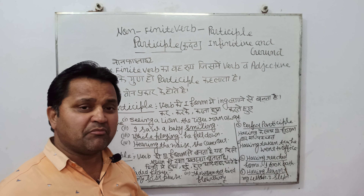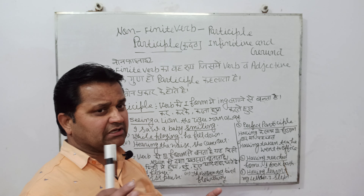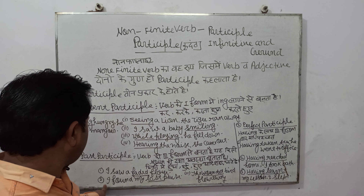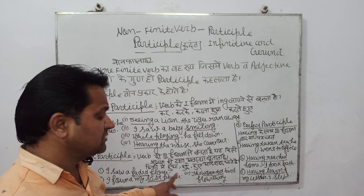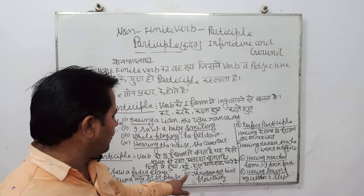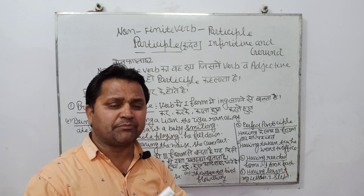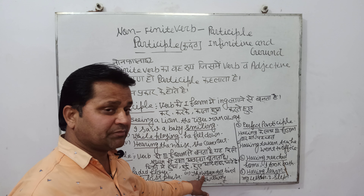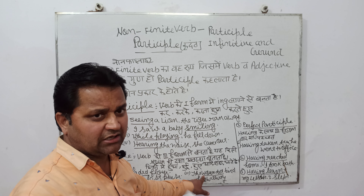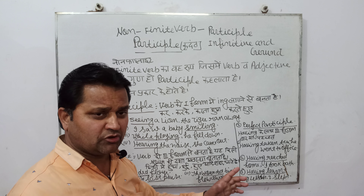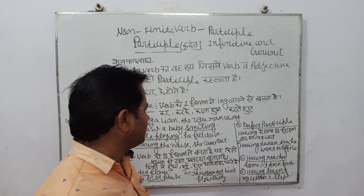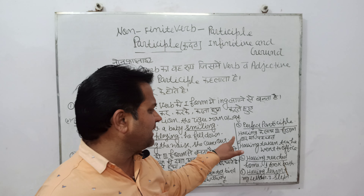Ye kisi noun ki kisi avastha ko darsata hai. Jaise, I saw a faded flower — maine ek murjhaya hua phool dekha. Here in this sentence, 'faded' is past participle. I found my lost purse — mujhe mera khoya hua purse mil gaya. In this sentence, 'lost' is past participle. The wounded bird flew away — ghayal hua pakshi ud gaya. In this sentence, 'wounded' jo hai, wo past participle hai, kyunki third form hai aur pakshi ki dasha dikha raha hai — ghayal hua.